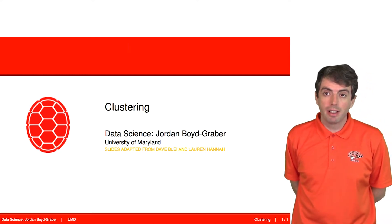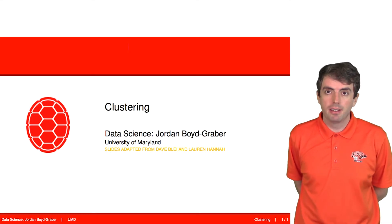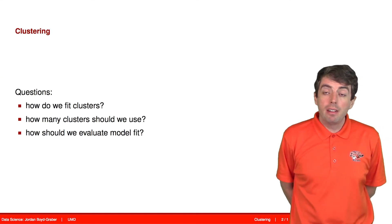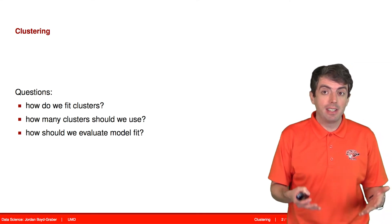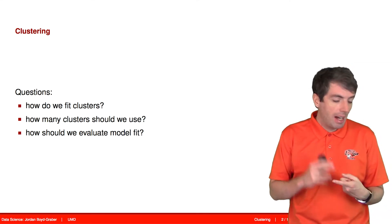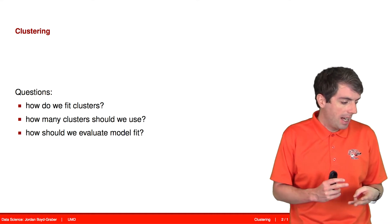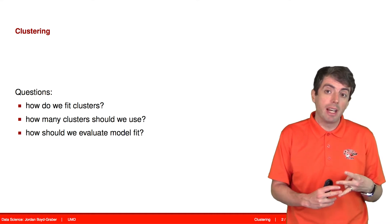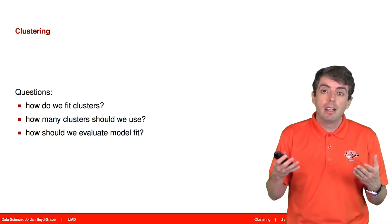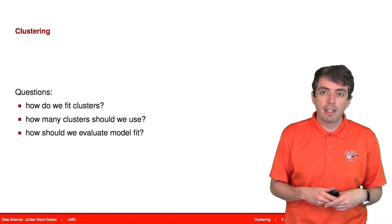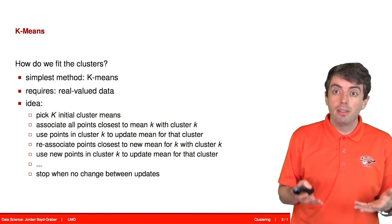Let's continue talking about clustering by talking about a specific clustering algorithm called k-means clustering. Whenever you talk about a clustering algorithm, one of the questions you have to answer is how do you figure out what the clusters are, how do you know how many clusters you're going to have, and how do you know whether you have a good answer or not. The way that k-means clustering works is very, very simple.